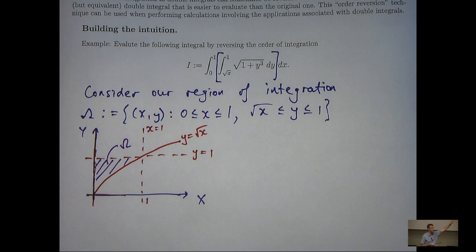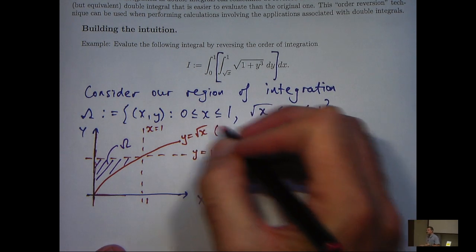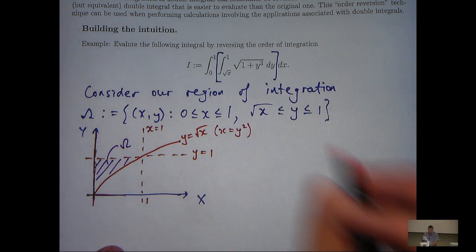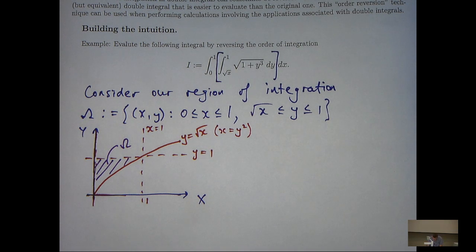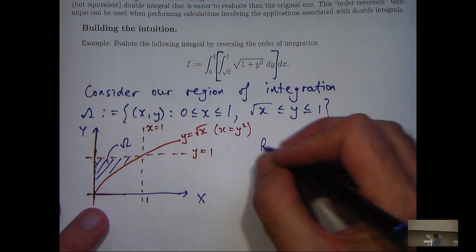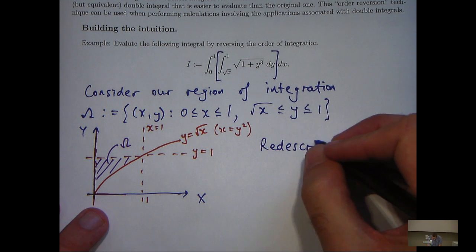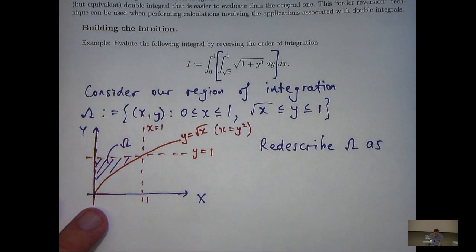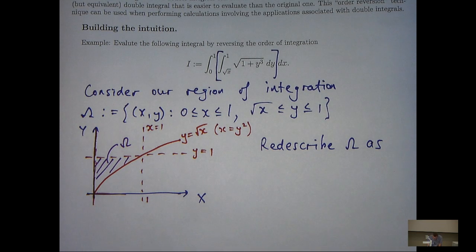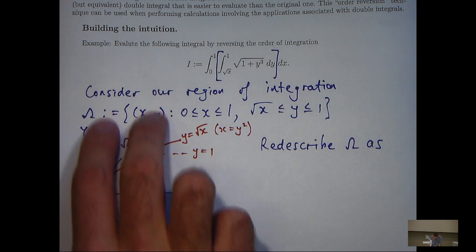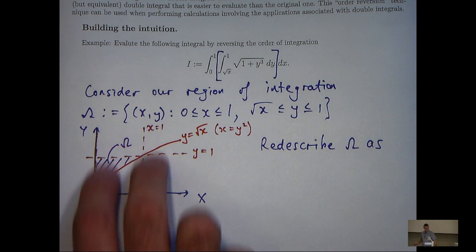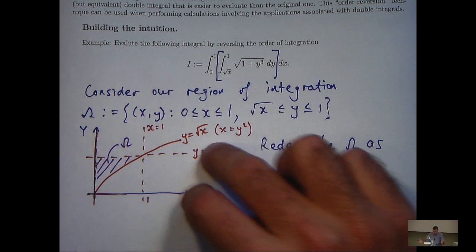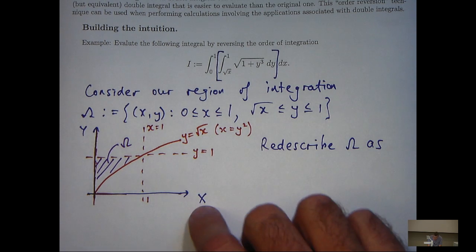Now, before I get there, I'm going to, instead of having y as a function of x here, I'm going to write x in terms of y. That would be clear why I've done that in a moment. Right, so let's re-describe omega in mathematical terms. So, instead of having two parallel lines that are parallel to the y-axis, let's use two parallel lines that bound omega above and below that are parallel to the x-axis.